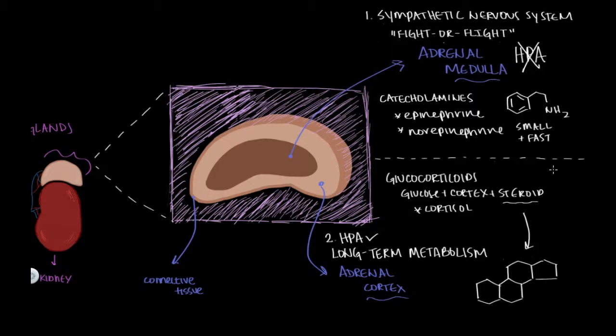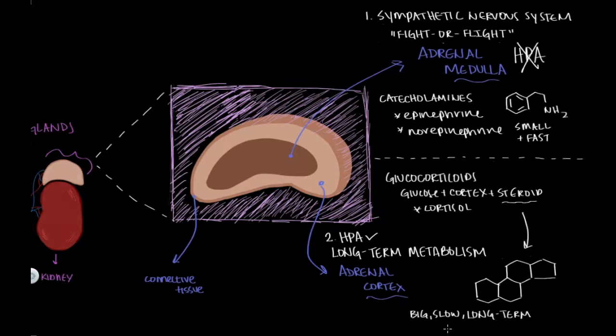On the other hand, glucocorticoids produced by the adrenal cortex take a longer time to enter the bloodstream, so I think of them as slower with longer lasting effects. Scrolling down now, we're going to walk through how these two regions of the adrenal gland function during the stress response.